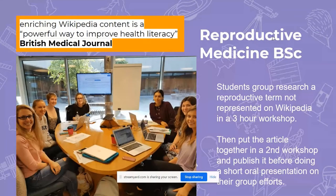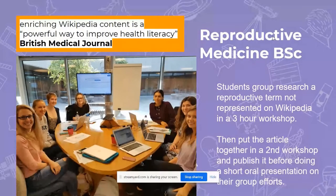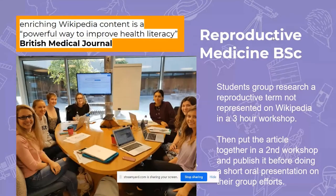Students come together — science students, medical students, intercalating students — all come together to collaboratively research a reproductive medical term not yet represented on Wikipedia, working in a three-hour research workshop with academic support librarians. They then put the article together in a second workshop and publish it before doing a short oral presentation on their group efforts.